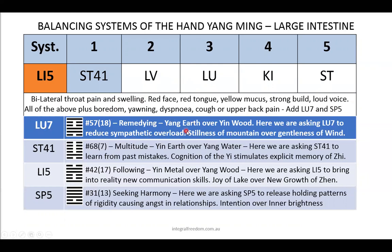Stomach 41: the condition of the Yi stimulates the explicit memory of the Zhi, so that we are able to learn from our past mistakes. This is the quality of the fifth line of the primary hexagram of the stomach, which is Kan/Water, danger. If anyone is interested, look up the 29th hexagram — Kan Water — then research the fifth line and you'll get an understanding of this approach.